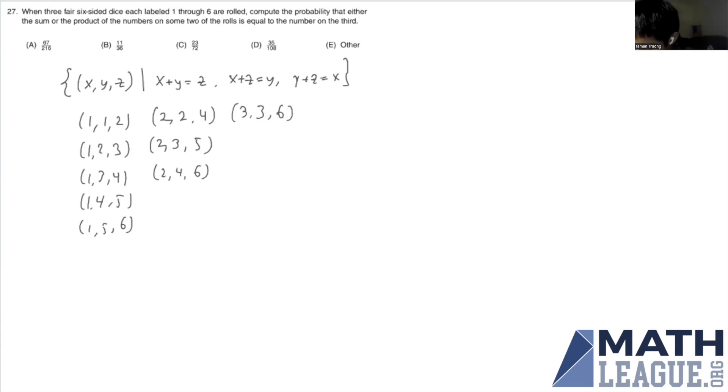This first pair, 1, 1, 2, can be done in three ways. Basically, three factorial, but the ones are the same, so you just divide by two. But here, 1, 2, and 3, these can be arranged in six ways. And then doing everything in a similar fashion gives us this.